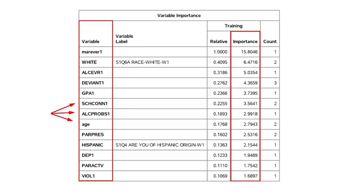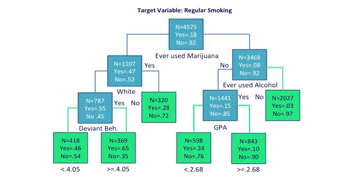Here we see that variables such as school connectedness, alcohol problems, and age have importance scores that are relatively similar to grade point average, which was selected as a split in our final model. Notably, while decision trees such as this one are easy to interpret and often quite informative, it's also important to recognize that small changes in the data or decisions about the modeling approach can lead to very different splits.